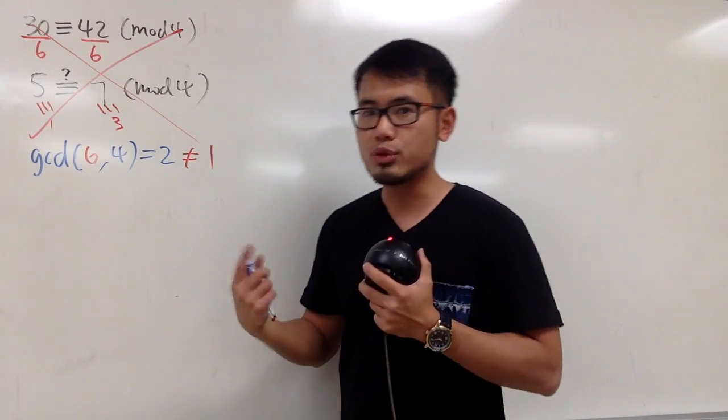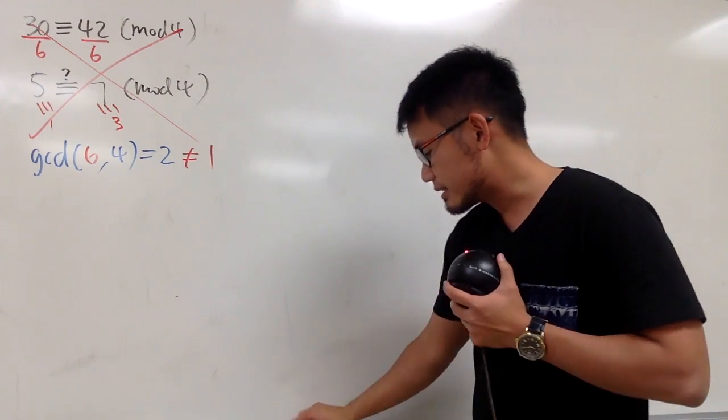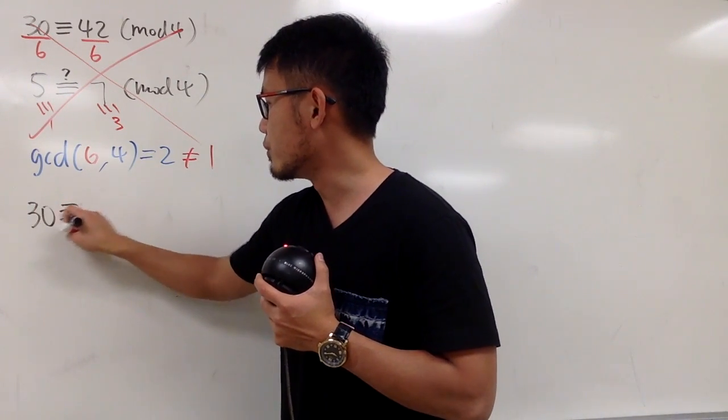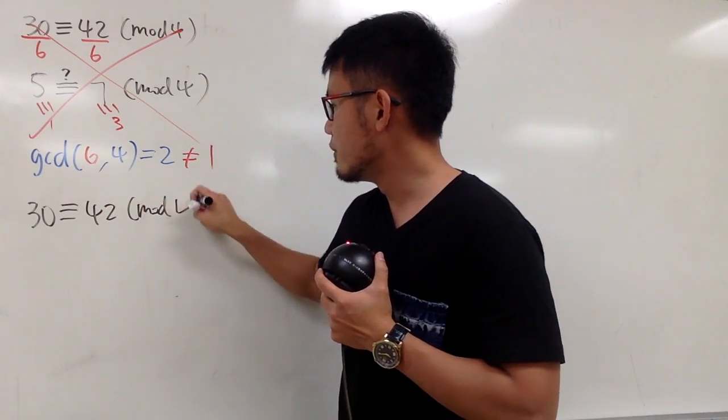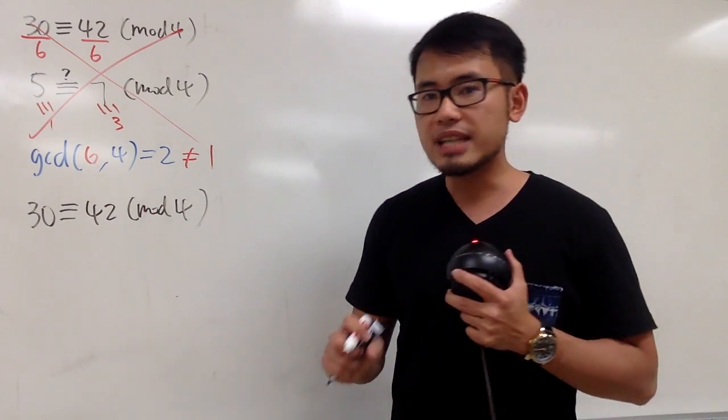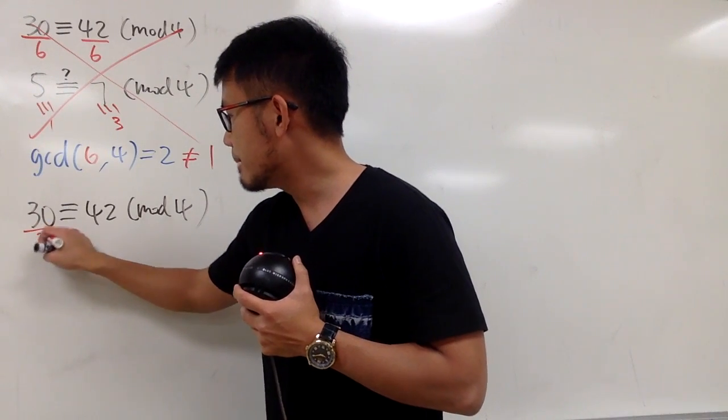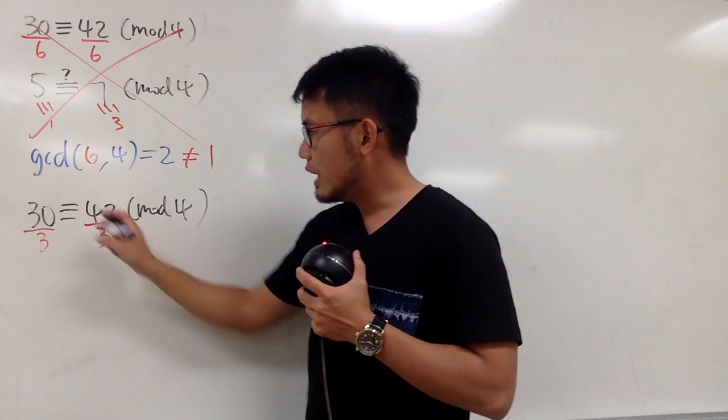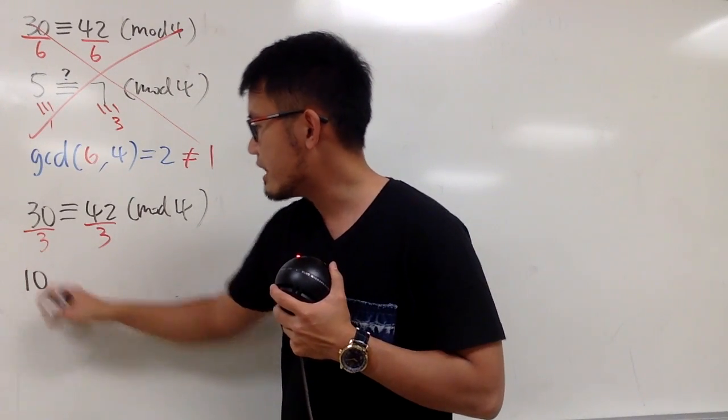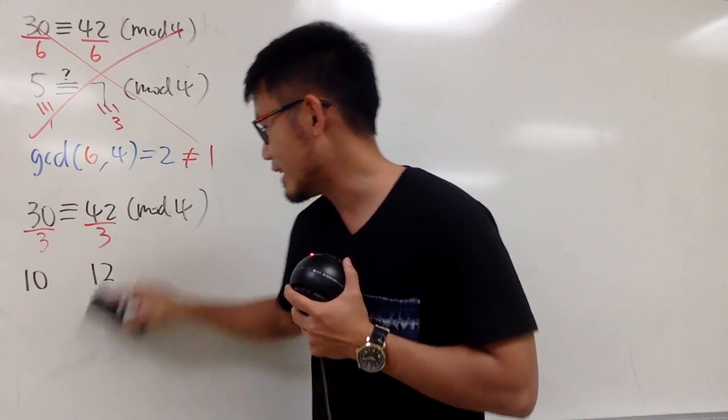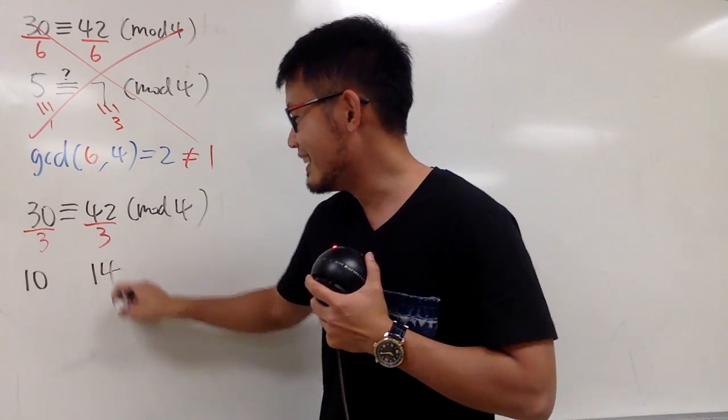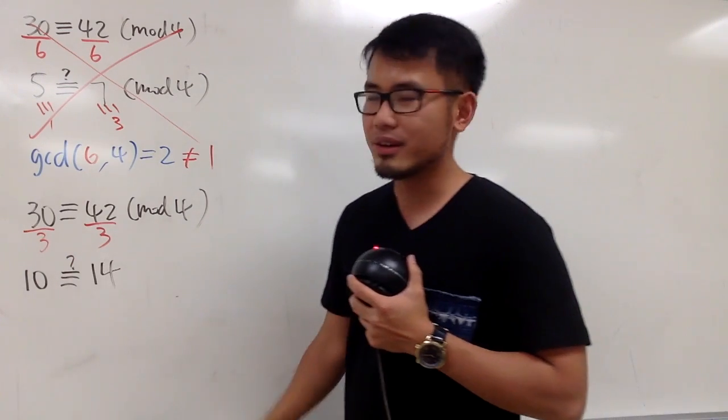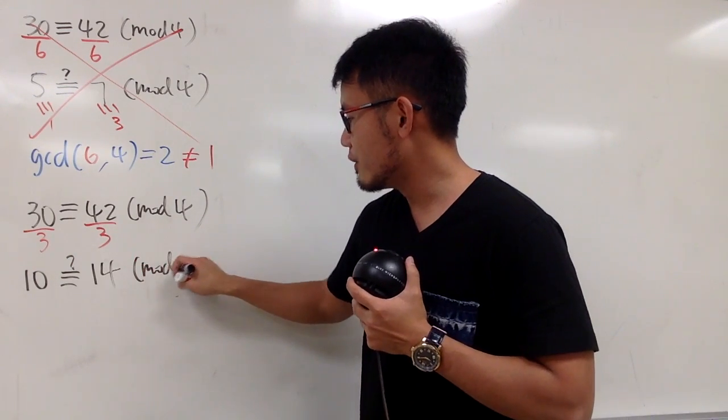And let me just demonstrate another example. Let's take a look again with 30 being congruent to 42 mod 4. This time, let me divide the left-hand side by 3 and also the right-hand side by 3. Divide both sides by the same number, of course. And you see that on the left-hand side we have 10, on the right-hand side we have 14. Are they still congruent to each other mod 4?